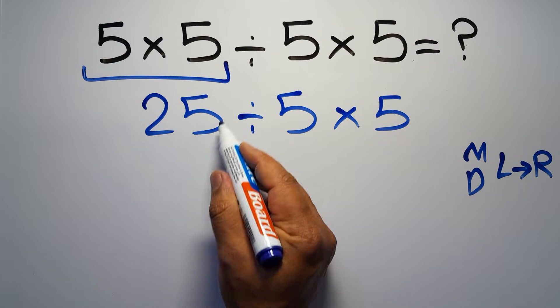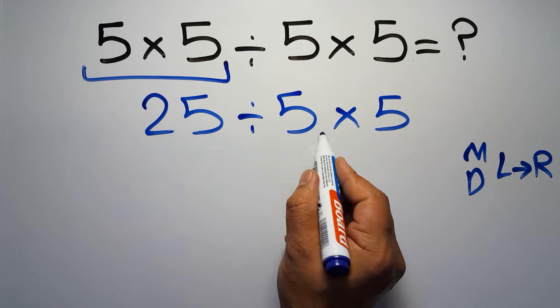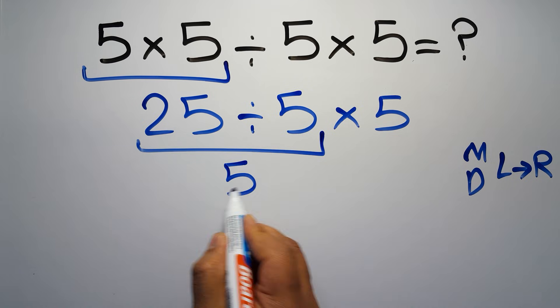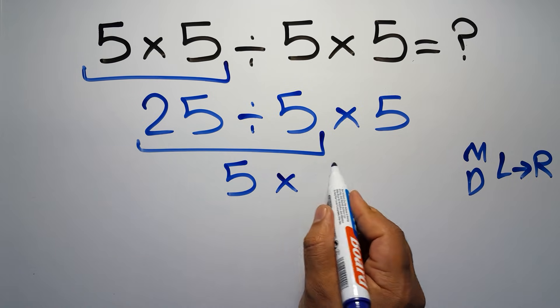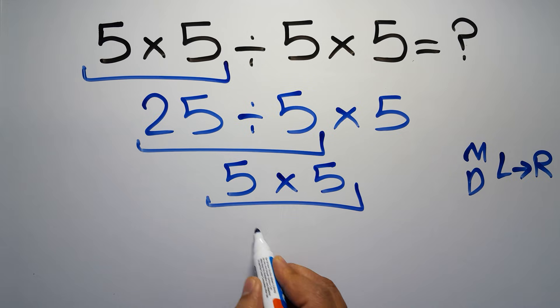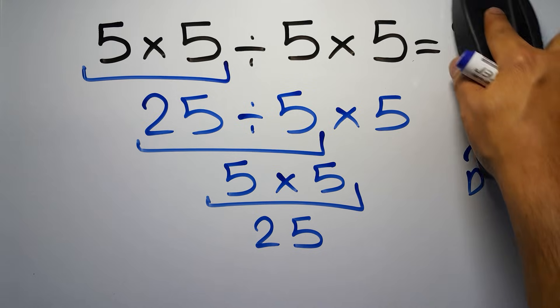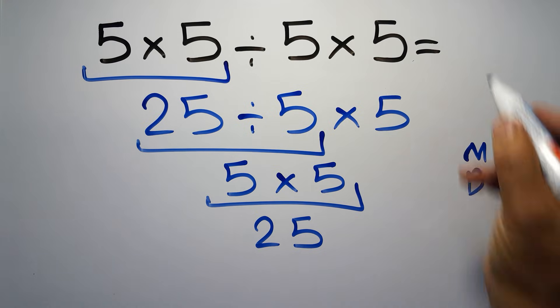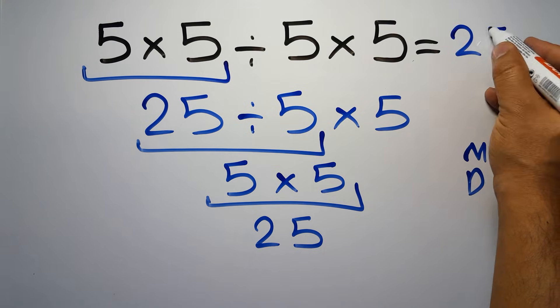Now we have to do this division: 25 divided by 5 is just 5, so 5 times 5, which equals 25. This is our final answer to this problem. The correct answer is 25.